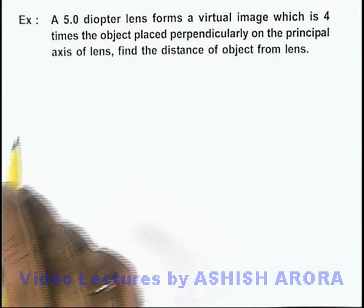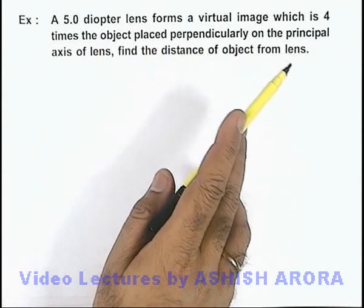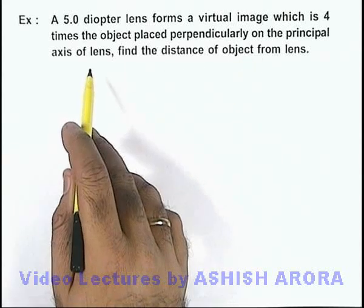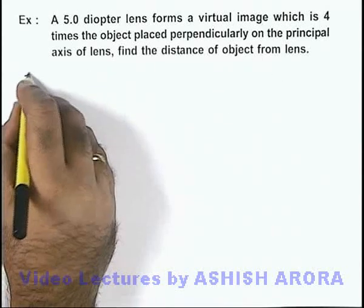In this example we are given that a 5 diopter lens forms a virtual image which is 4 times the object placed perpendicularly on the principal axis of a lens. We are required to find the distance of object from lens.